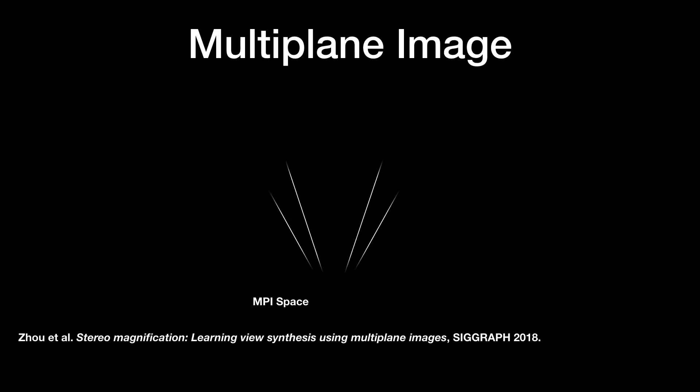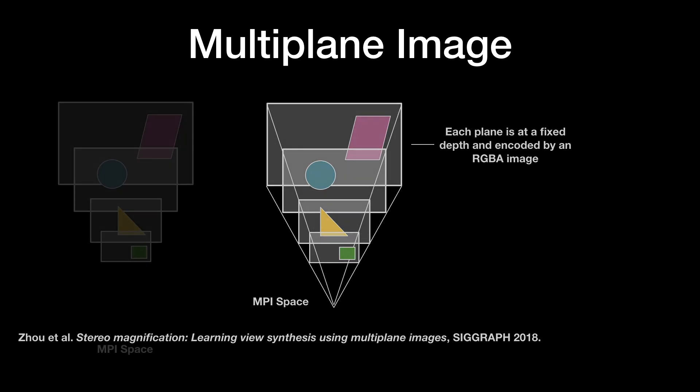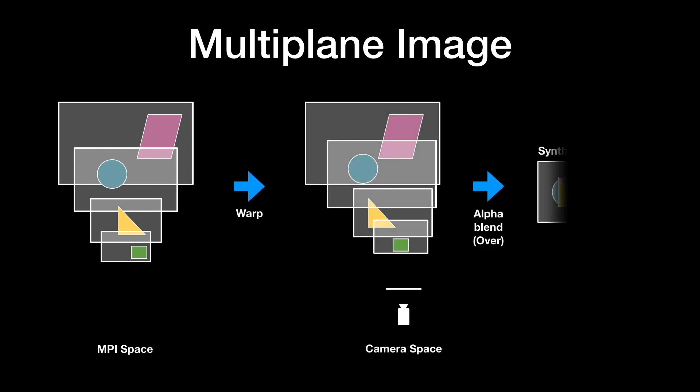An MPI consists of a set of planes, each with an associated RGBA texture map. The planes are positioned at equally spaced inverse depths with respect to a virtual reference camera. To render an MPI to an image at a new viewpoint, we first warp the MPI images and then composite them using standard alpha blending. But how do we create an MPI from a set of input images?